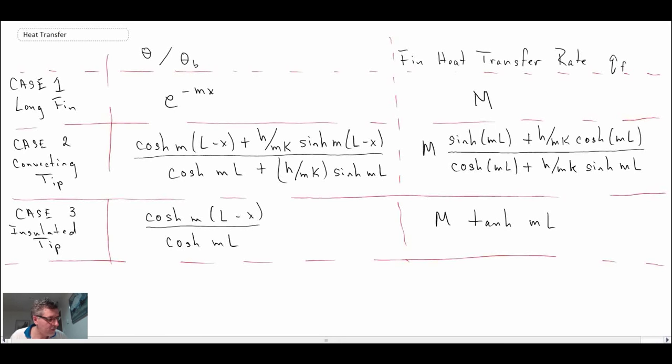Okay, so those are the results that you get when you put in the boundary conditions and solve for C1 and C2. In here we have a lot of hyperbolic sines, cosines, and tangents.